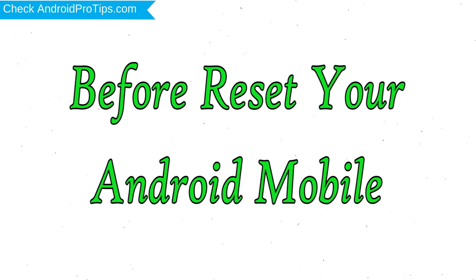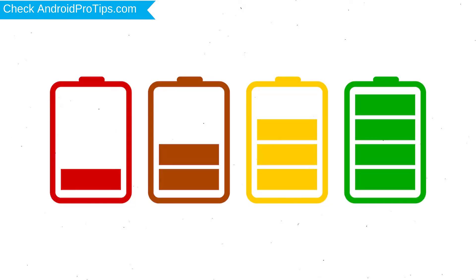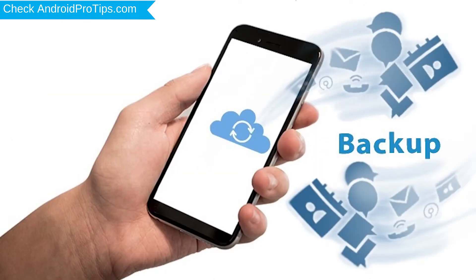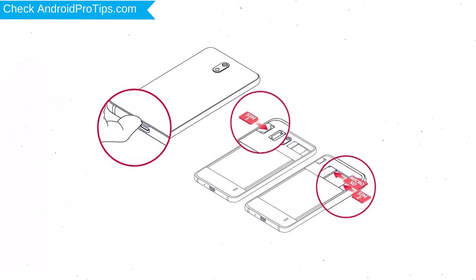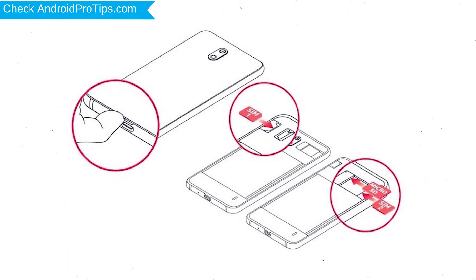Before resetting your mobile, charge your mobile if the battery is less than 50%. You need to make sure that the data on your device is backed up so you do not lose valuable photos or documents. Reset deletes all your mobile data, so you should back up all important data and remove SIMs and SD card.